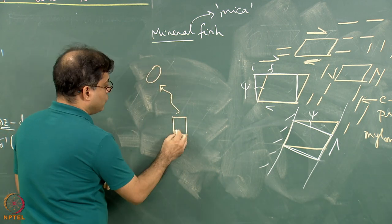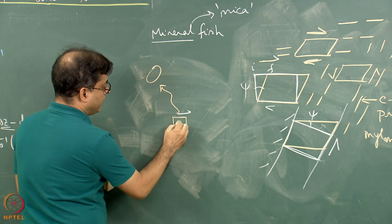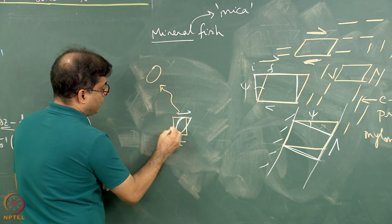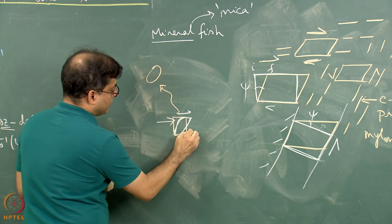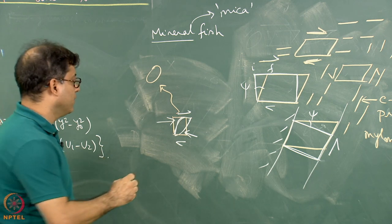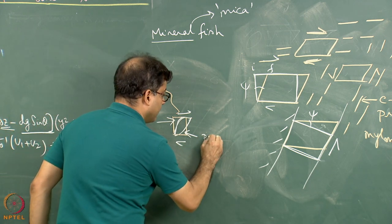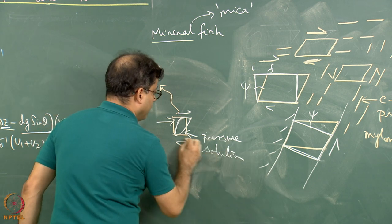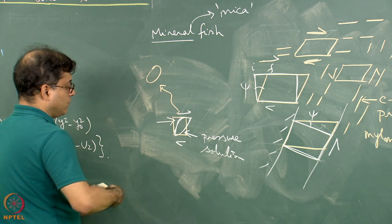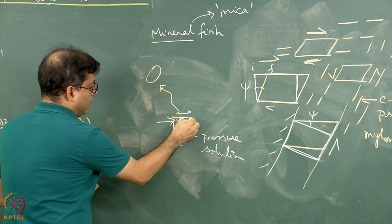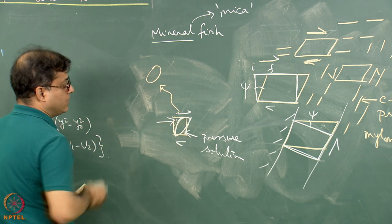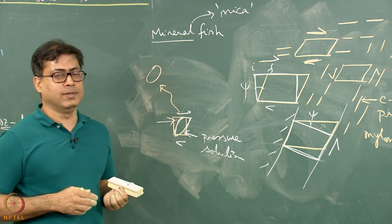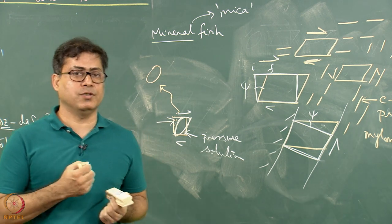It is assumed that during this kind of shearing, the grain attains a lenticular geometry where the corners get dissolved and carried away by pressure solution. Pressure solution activity takes the material at the corners out, leading to a lenticular geometry. Because of this assumed mechanism, it becomes a bit difficult to find out the amount of shear strain with certainty. The same problem applies to the sigmoid geometry.